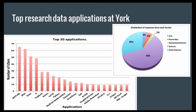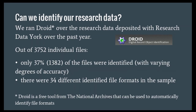Research data software applications and thus research data formats are incredibly numerous. We're showing the top 20 research data applications at York — information gathered by running a questionnaire with 328 responses. In total there were 260 different software applications that researchers mentioned using to create or analyze their research data. What's more interesting is the huge long tail of 240 other applications that just one or two people are using. That points to a real problem around how we're going to manage the identification and future preservation of research data.